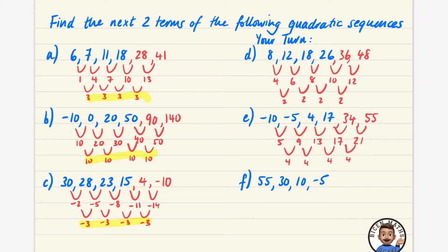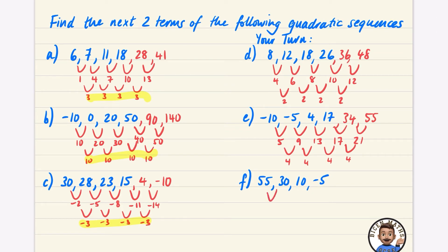The last one's an example of some decreasing. 55 to 30 it's going down 25, then it's going down 20, then it's going down 15. So from 25 to 20 it's actually increasing by 5. The next one is going to have to decrease by 10, so minus 5 minus 10 is minus 15. Then hopefully you can predict that this next one is going to be increasing so that it's subtracting 5, so it's going to be minus 20 for that one.